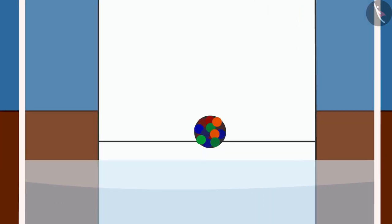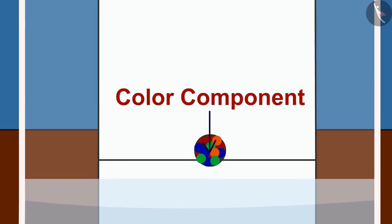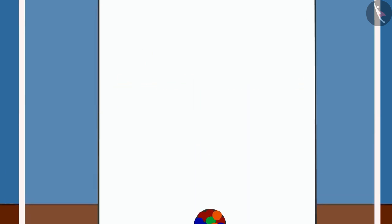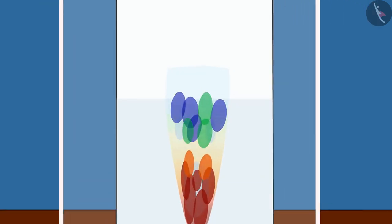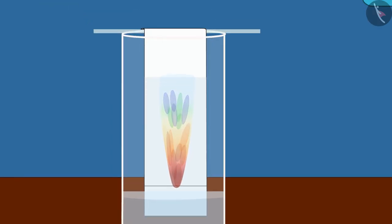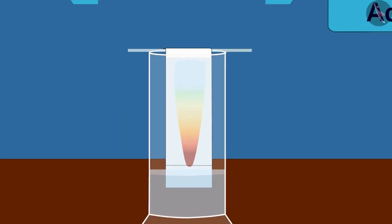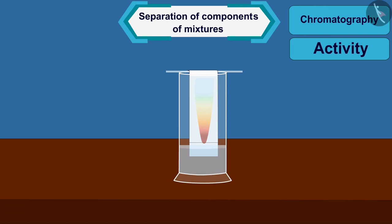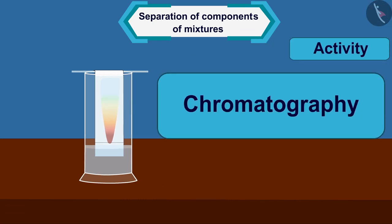Often, the dye is a mixture of two or more colours. The colour component which is more soluble in water rises faster and thus the separation of colours becomes possible. This method of separating components from a mixture is called chromatography.